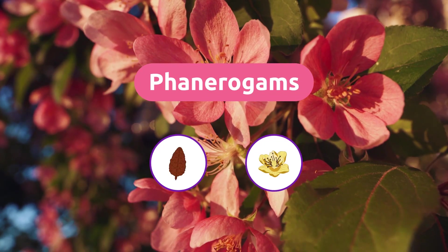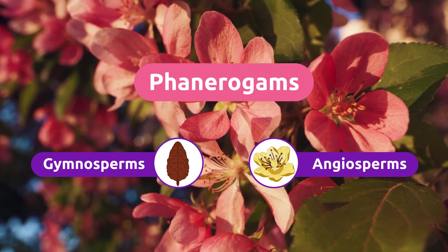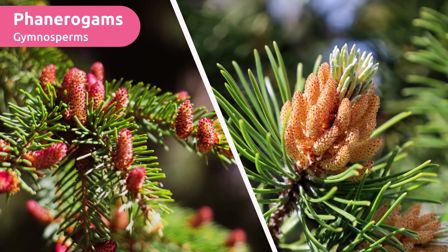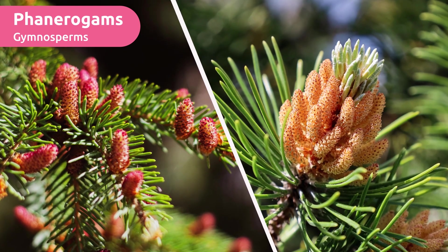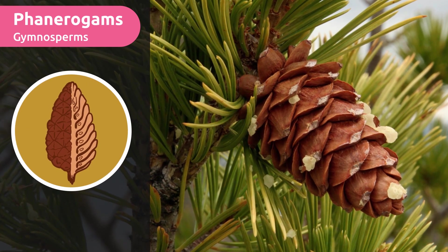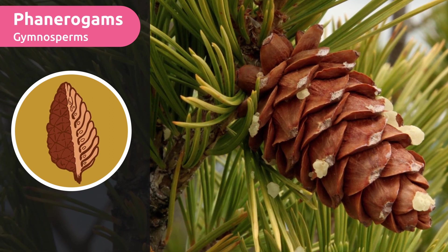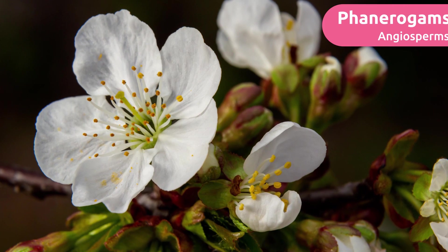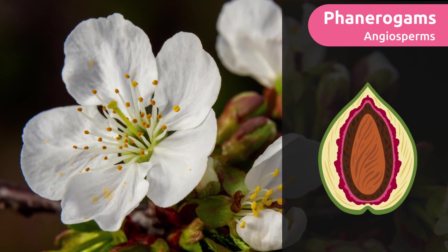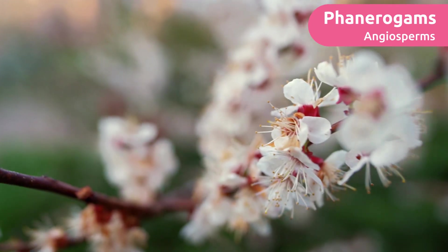There are two types of phanerogams: gymnosperms and angiosperms. Gymnosperm plants have rather unnoticeable flowers, like those of a fir or pine tree. The seeds are arranged on both sides of an axis, like a pine cone — perhaps you've seen them in parks and forests. In the case of angiosperm plants, the seeds are found inside the fruits during the maturation process. These plants' flowers are showy and eye-catching, just like those of an almond tree.